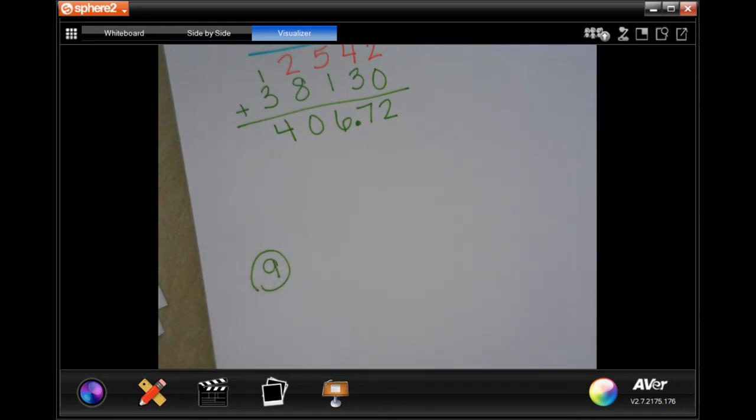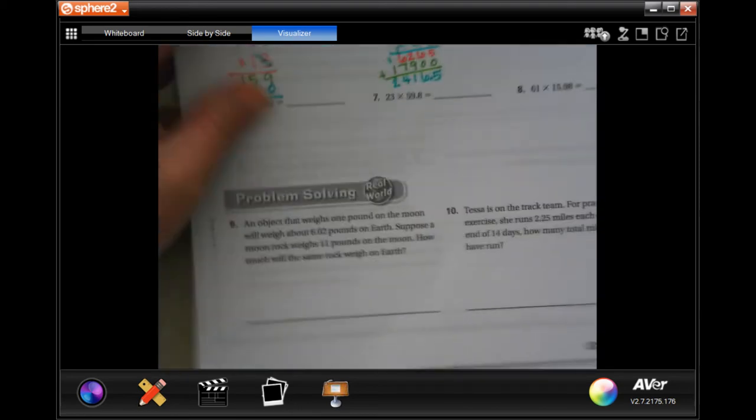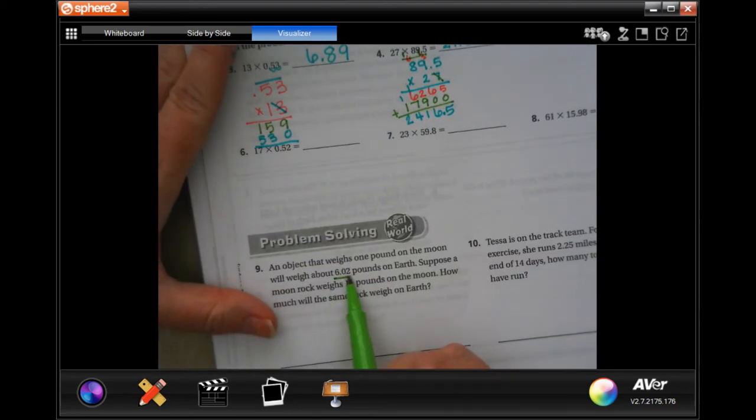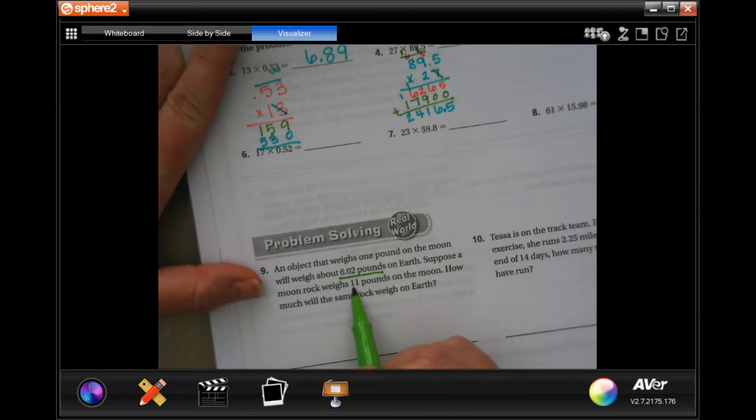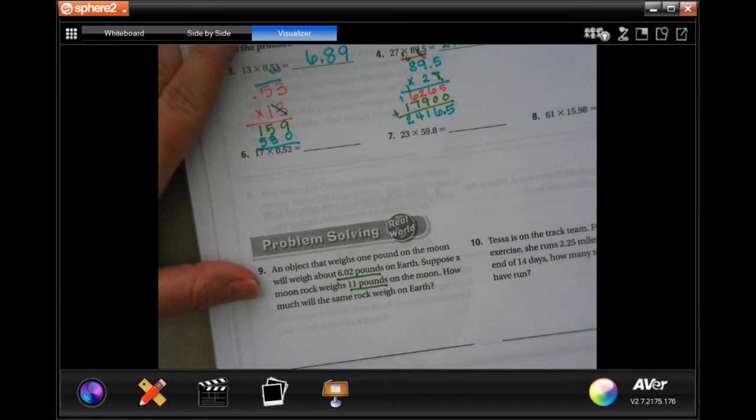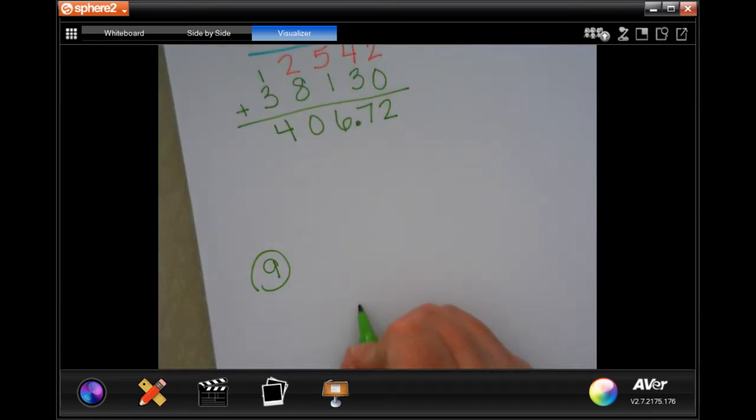And it says an object that weighs 1 pound on the moon will weigh about 6.02 pounds on Earth. Suppose a moon rock weighs 11 pounds on the moon, how much will it weigh on Earth? So we just need to take those two numbers and multiply them. So 6.02 times 11. So 1 times 6.02 or 602 is going to be 602. I don't have any ticks. I'm going to tap and I'm going to tell. And then again, 1 times 602, 602. Add them up.